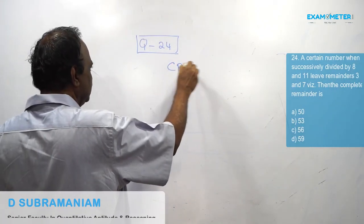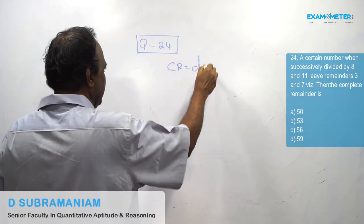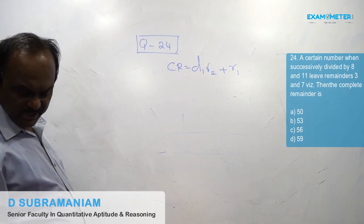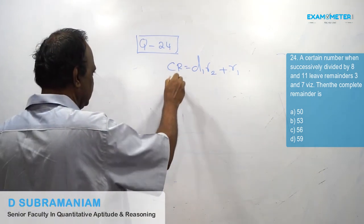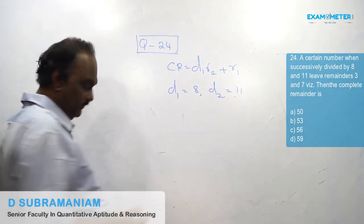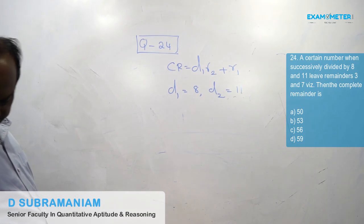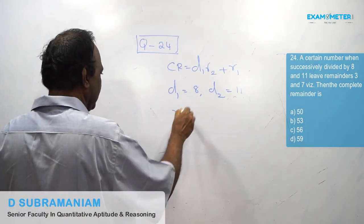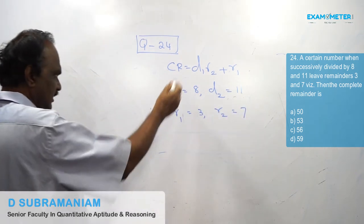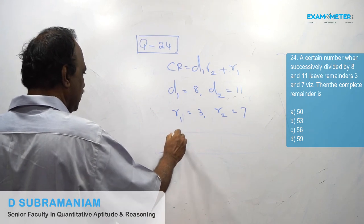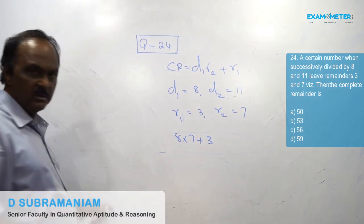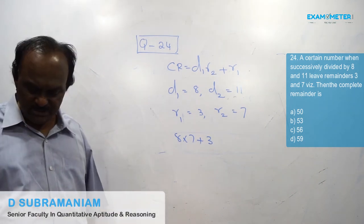CR = D1 × R2 + R1 = 8 × 7 + 3 = 56 + 3 = 59. So the answer is 59.